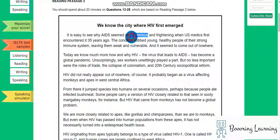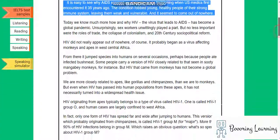It is easy to see why AIDS seemed so mysterious and frightening when US medics first encountered it 35 years ago. The condition robbed young, healthy people of their strong immune system, leaving them weak and vulnerable, and it seemed to come out of nowhere.